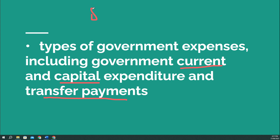I want you to think: if you were earning an average wage in Australia of about $65,000 per annum, how much of that would you pay in tax to the government? And what would they do with that tax revenue — what would they spend it on? Pause and have a think.